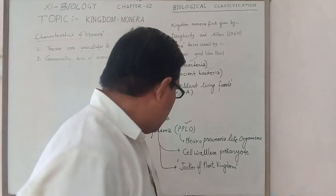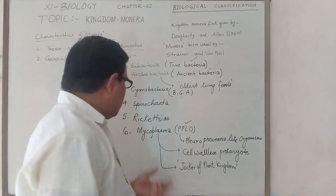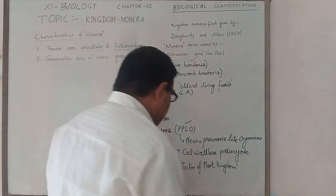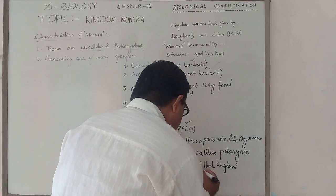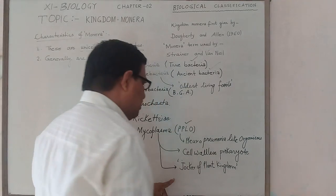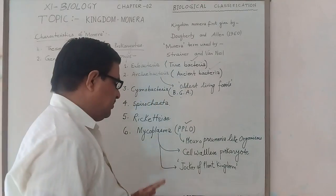Earlier, before the five-kingdom system of classification, Mycoplasma was given the term 'Joker of Plant Kingdom.'